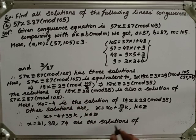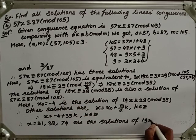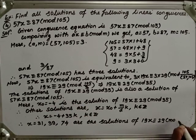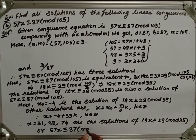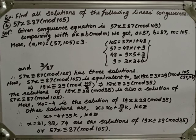And the solutions of 19x ≡ 29 (mod 35), or equivalently 57x ≡ 87 (mod 105), are x = 31, 66, 74. As such we can find the number of solutions and also the solutions of linear congruences.